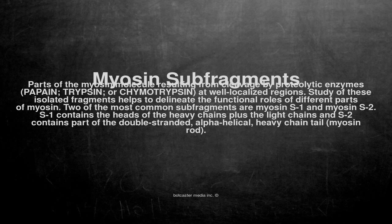Two of the most common subfragments are myosin S1 and myosin S2. S1 contains the heads of the heavy chains plus the light chains, and S2 contains part of the double-stranded, alpha-helical, heavy chain tail — the myosin rod.